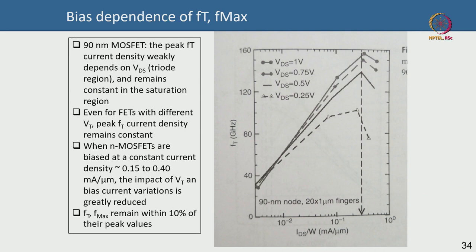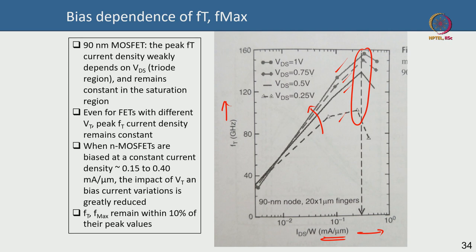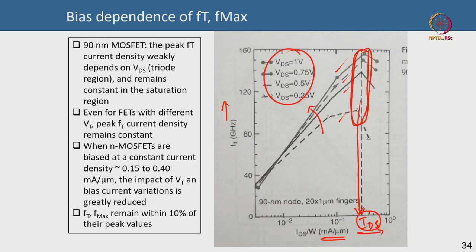An important difference from compound semiconductors is the bias dependence of cutoff frequency. A plot of FT versus drain current per unit width—in milliamps per micrometer—at different drain voltages (0.25, 0.5, 0.75, 1 V) shows that as drain voltage increases, the peak cutoff frequency more or less remains at the same drain current. So independent of drain bias, if you fix the drain current you get the same peak FT.